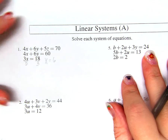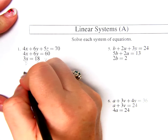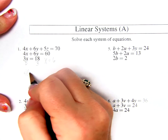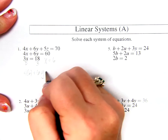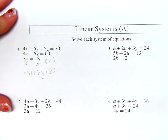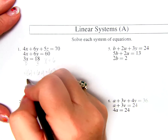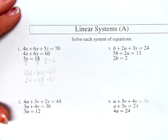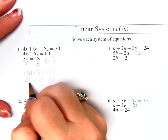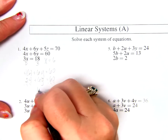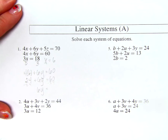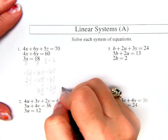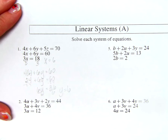Plug it into the second one. So 4 times 6 plus 6Y equals 60. So 24 plus 6Y equals 60. Subtract 24 — 6Y equals 36.